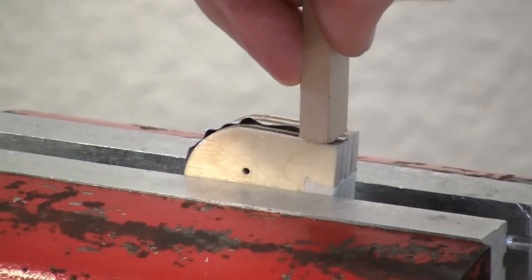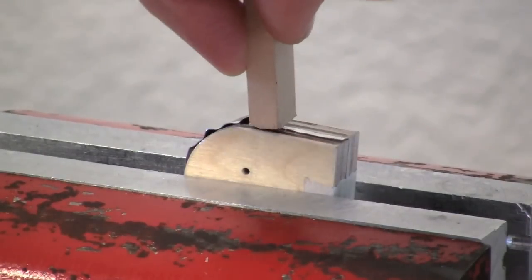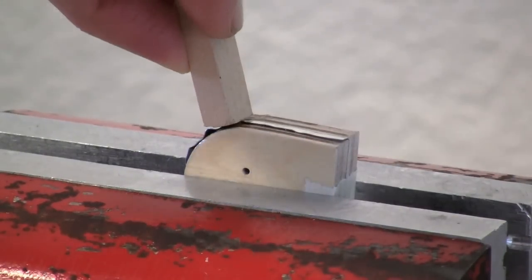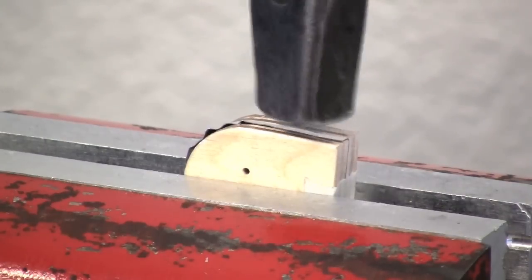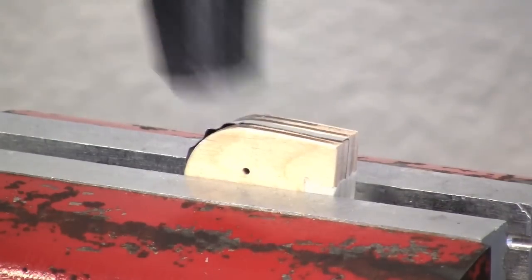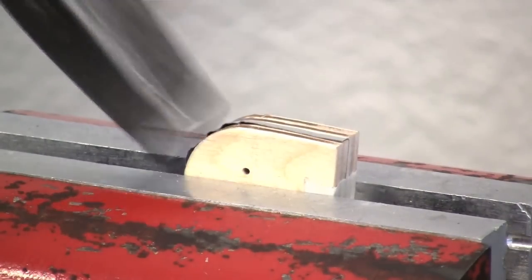As you go, you'll find that the tin plate wants to wrinkle up on you. That's okay, but try to keep the wrinkles as small as possible. This might take a little practice. The wider the folded edge, the more it will want to wrinkle.